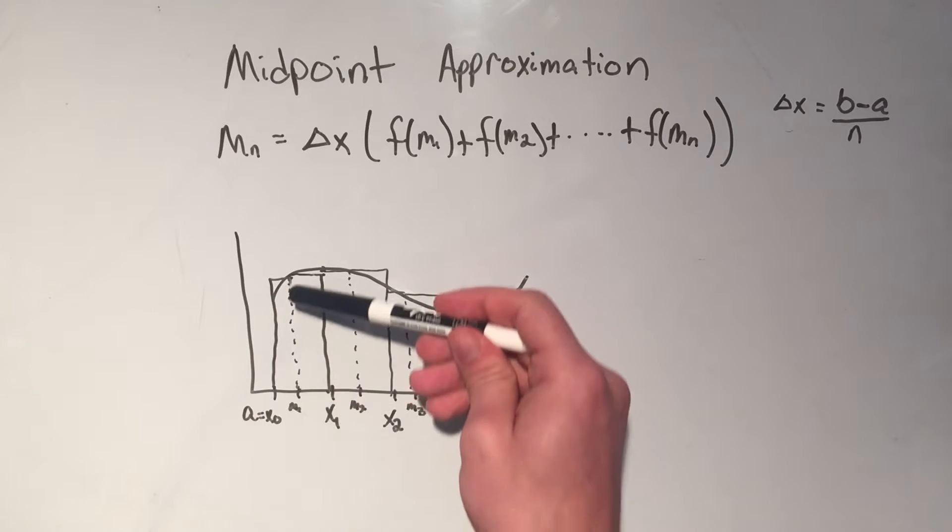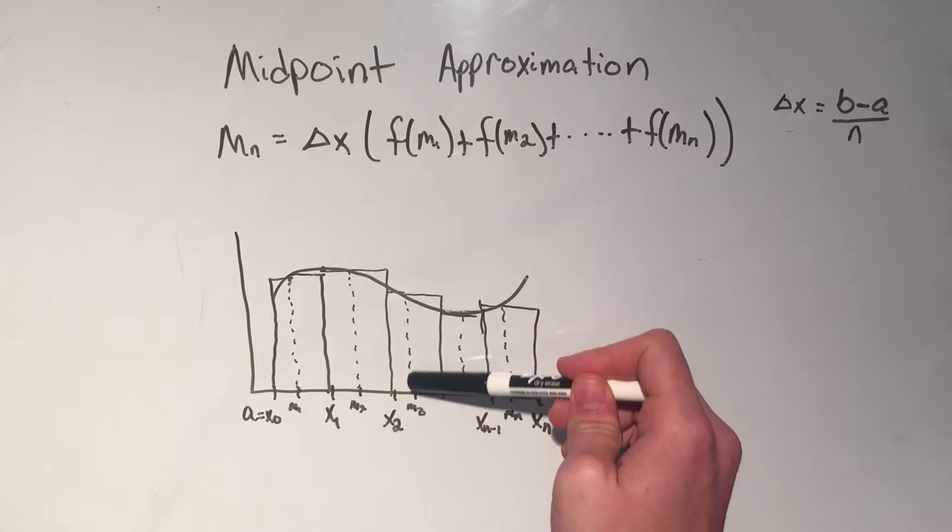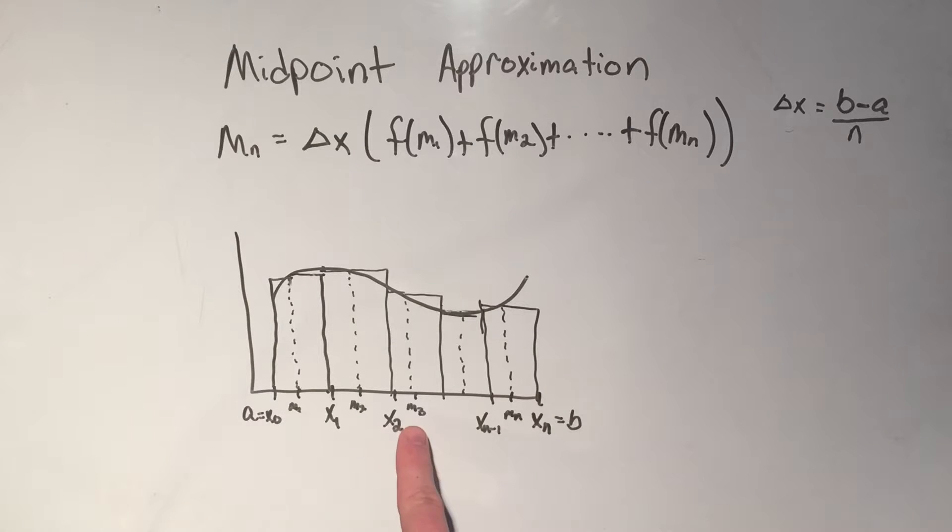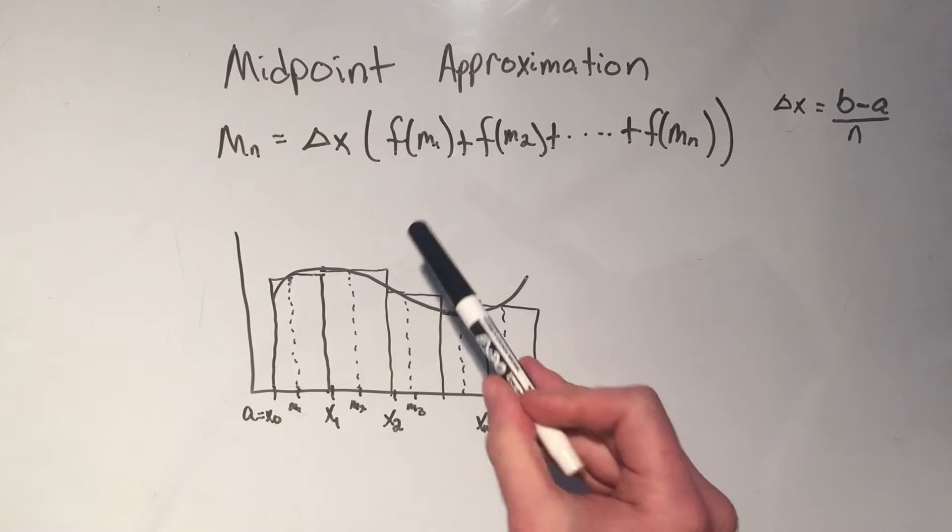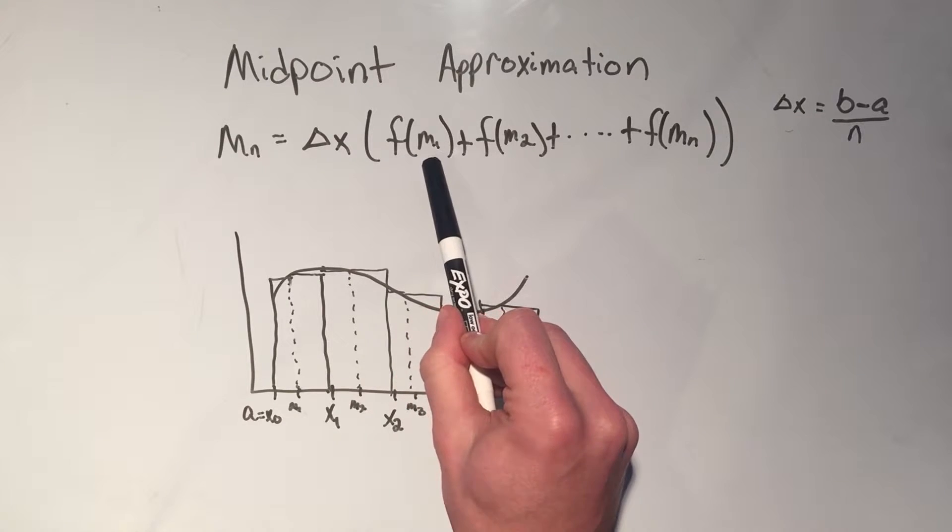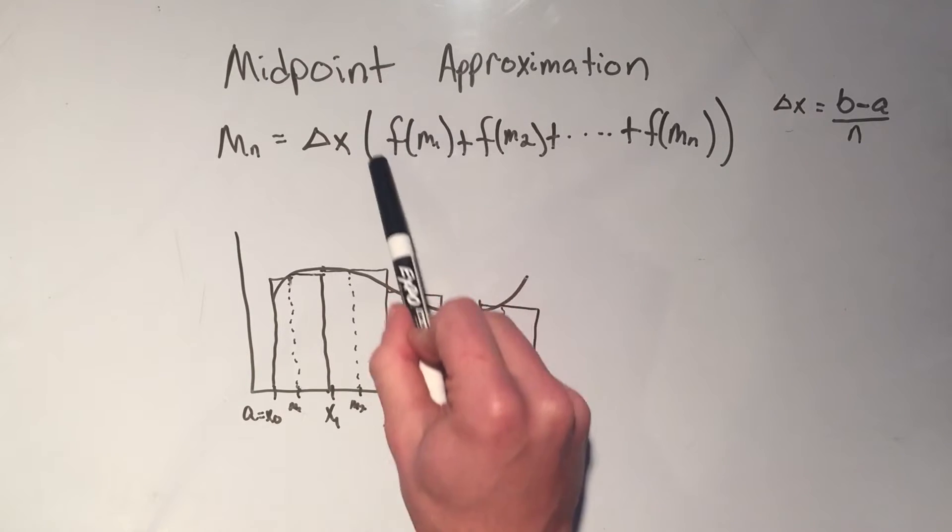And you'll see that these rectangles go up as high as the function evaluated at all of these midpoints. That's why this formula says f of m1. That's the height of this rectangle.